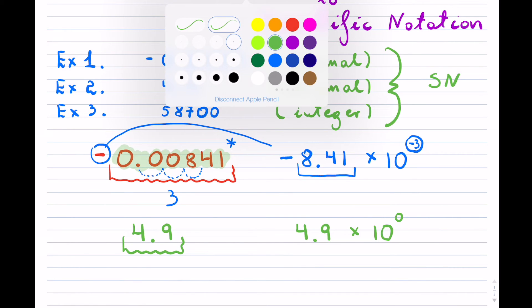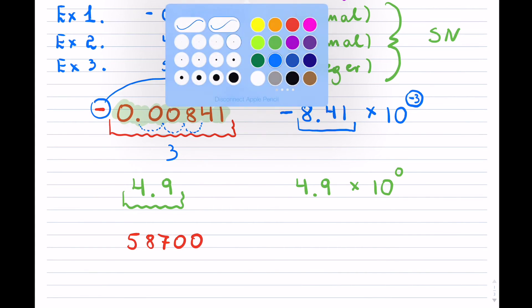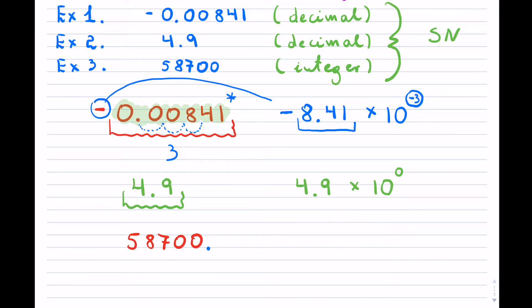Now looking at the third example, if I take the integer 58700, I don't see any decimals in this number because it would be unnecessary to put one in. However, there is a hidden decimal always kind of at the end, which we don't really write. So now you notice that if I want to make this number between 1 and 10, I will have to start shifting the decimal in the opposite direction. So that becomes 5.87.